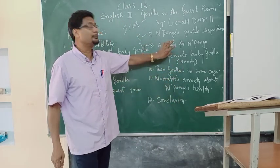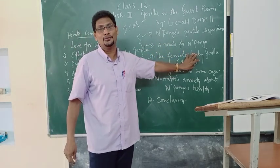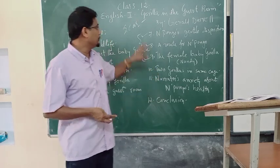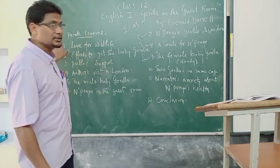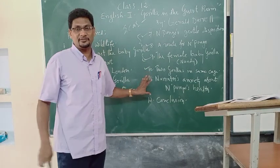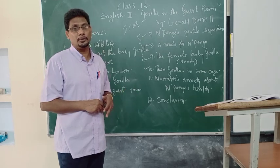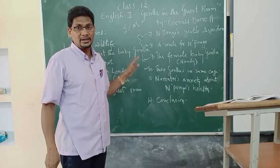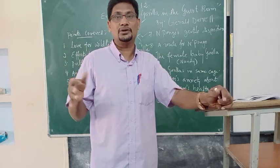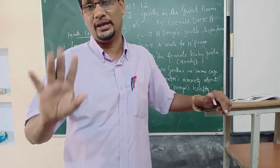So, dear students, what we have learned today is about Nandy — Pongo's mate — being put inside his cage, and the behavior of both animals. This is our summary. We have covered almost ten points from the chapter. The last part remains, which we will complete in one more class. Hope you have understood — please do learn by reading and review this video. For any clarification, write to Cloud Education and I will get back to you soon. Thank you very much, have a nice day.